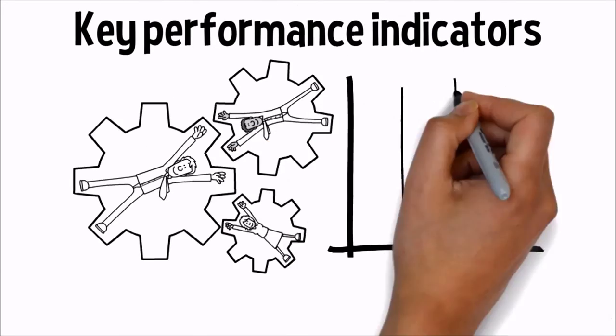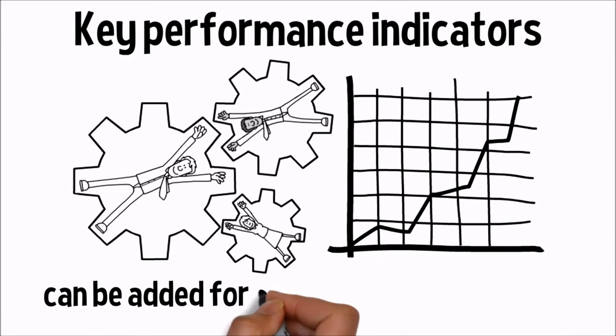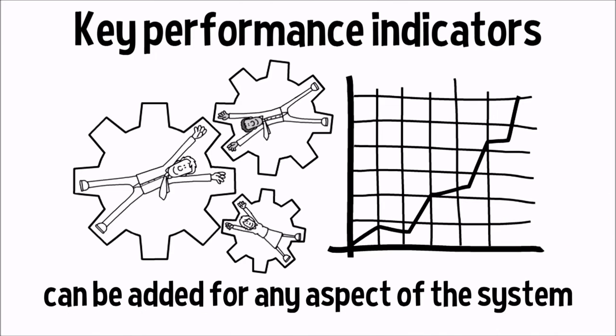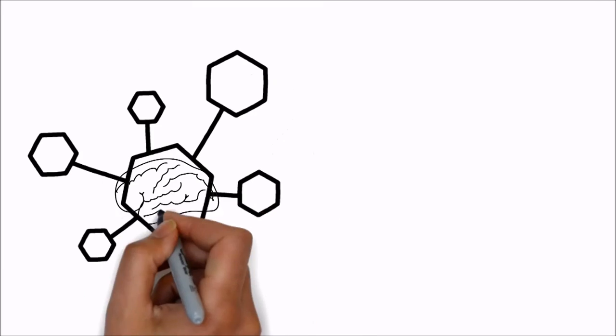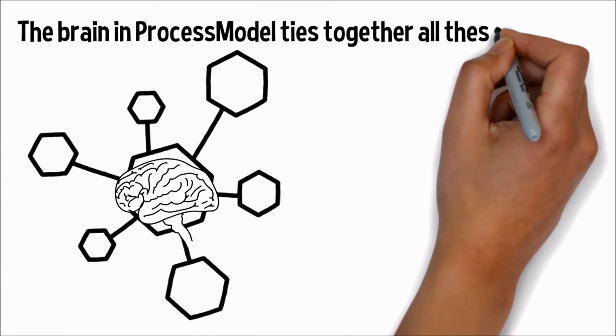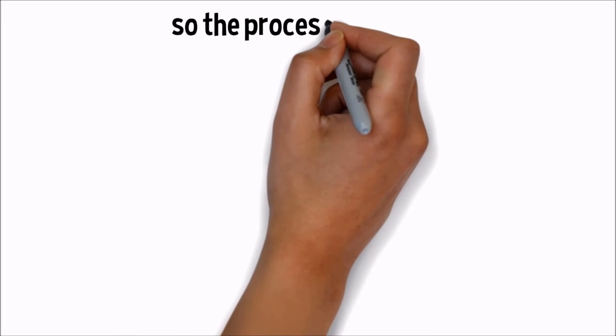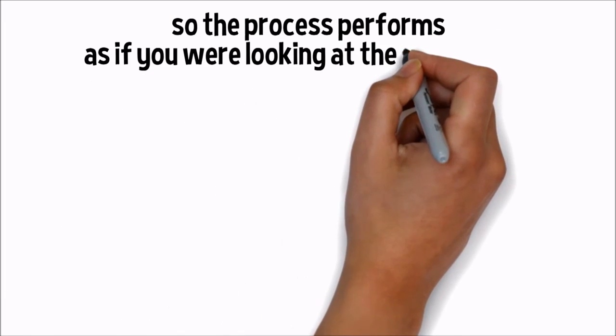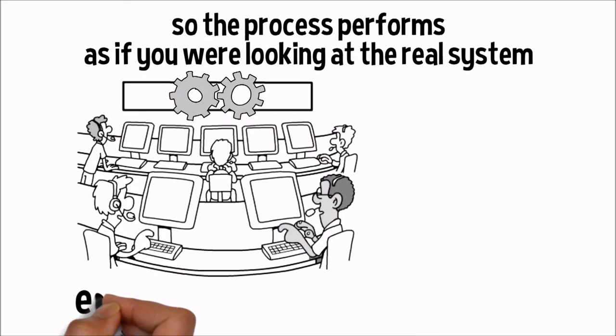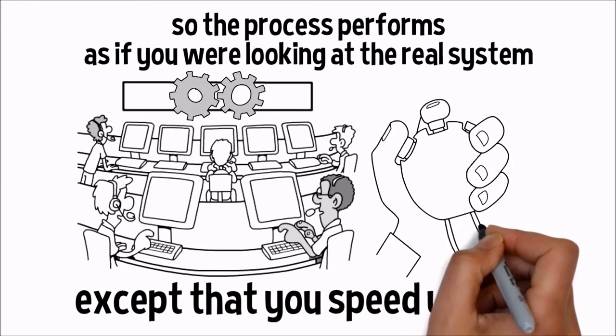Key performance indicators can be added for any aspect of the system. The brain in process model ties together all these elements and adds the dimension of time, so the process performs as if you were looking at the real system, except that you speed up time.